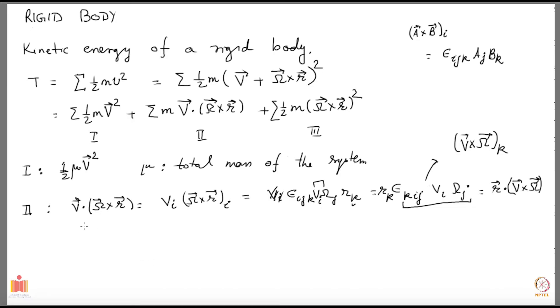Which means my second term becomes summation m r dotted into v cross omega. Again, because the center of mass is at r equal to 0, this quantity is equal to 0 because summation r is 0 for the center of mass. This is going to give you the center of mass if you divide it by the total mass.